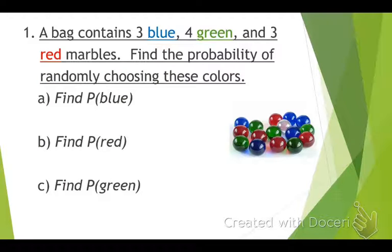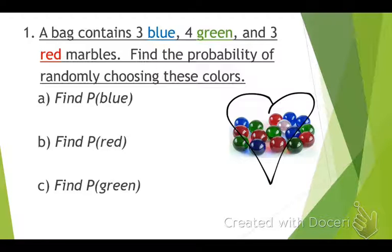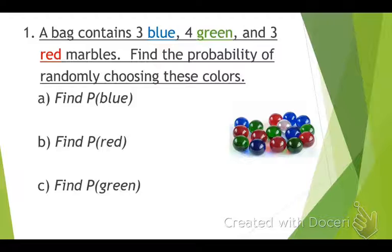Here's a scenario: there's a bag with a bunch of marbles — three blue marbles, four green marbles, and three red marbles. Find the probability of randomly choosing these colors. First up, find the probability of choosing a blue. So if I stick my hand inside that bag, what's the probability I will pull out a blue one? We know we have to do favorable over total.